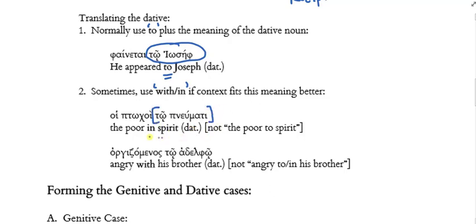Sometimes you'll use 'with' or 'in' if the context fits better than 'to.' From Matthew: 'hoi ptōchoi tō pneumati' — 'the poor in spirit.' That dative has the semantics of 'in,' not 'to.' Also from Matthew's gospel: 'orgizomenos tō adelphō' — 'angry with his brother.' The dative here means 'with.' Note that the article by itself can give a possessive sense, so even without a possessive pronoun, it's best translated as 'angry with his brother.'